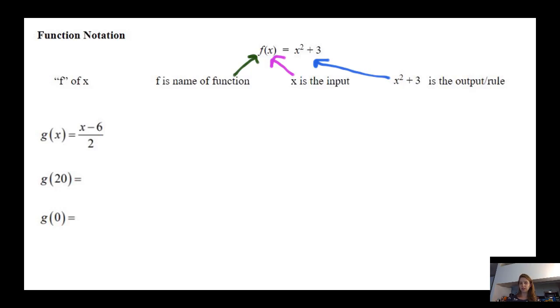And now we have another function underneath it. G of x equals x minus six over two. So now the name of the function is G. And we're going to evaluate the function G at a couple of different inputs. First one is G of 20. So we're going to rewrite this function with X being 20. So that is the input.